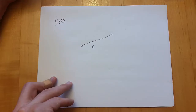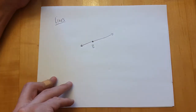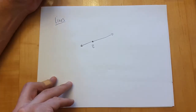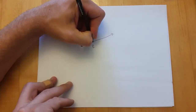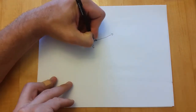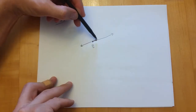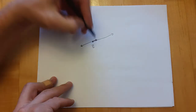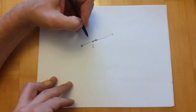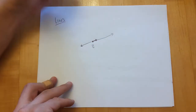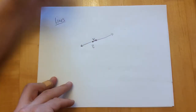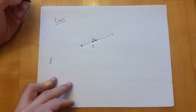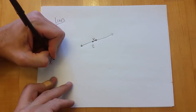Now we'll go into the geometry of lines. A line in vector notation — it's easy to draw. A line goes both ways forever; it's a one-dimensional linear object. We're going to have some point, p-naught, as an initial point. It could be any point on the line, not necessarily the closest one to zero.